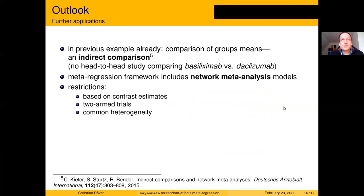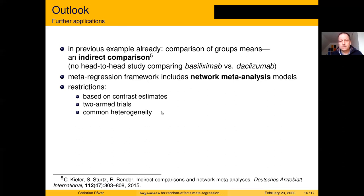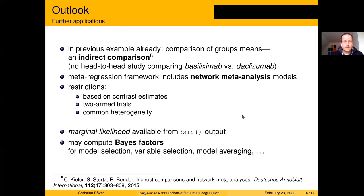The contrast between the two treatments is technically an indirect comparison, which means we're entering the domain of network meta-analysis models. In fact, some network meta-analysis problems can be analyzed with bmr, with restrictions: we need contrast estimates from individual studies, can only work with two-armed trials, and have a single common heterogeneity parameter. Additionally, from the bmr output we can obtain the marginal likelihood, which enables computation of Bayes factors — useful for model selection, variable selection, and model averaging.